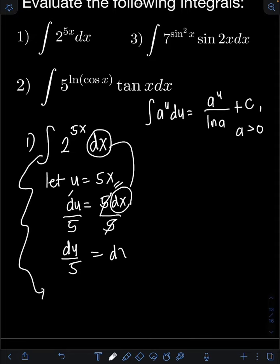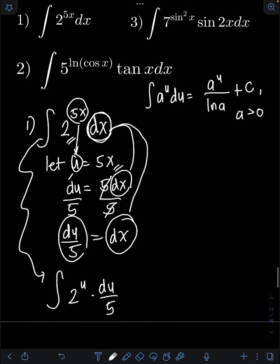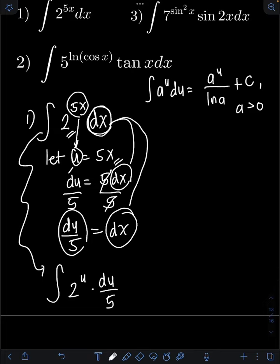Substituting into the original integral, the base 2 raised to 5x becomes 2 raised to u, and dx becomes du over 5. This 1/5 is a constant, so I can put it in front of the integral, giving us 1/5 times the integral of 2 raised to u du.